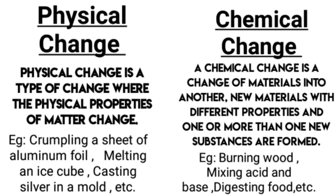Chemical change is a change of materials into another new material with different properties, and one or more than one new substances are formed. Examples include burning wood, mixing acid and base, digesting food, etc.